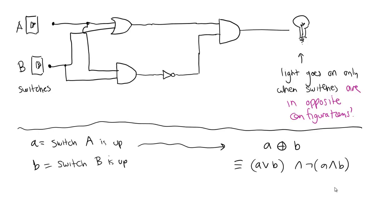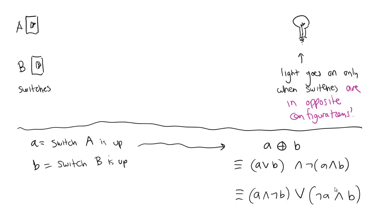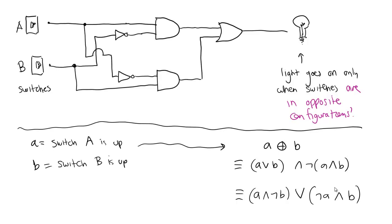We also proved that exclusive OR is logically equivalent to: A AND NOT B, OR NOT A AND B. Take a moment to figure out how you'd build the corresponding circuit for this — it'll look different but function logically the same. Pause the video and draw the circuit. Just because I'm not meeting in class doesn't mean I don't want you to do the work. Pause, draw the circuit, then compare with my version. Does yours match? Is it logically equivalent?